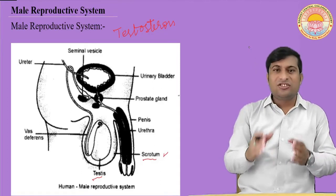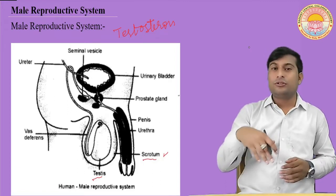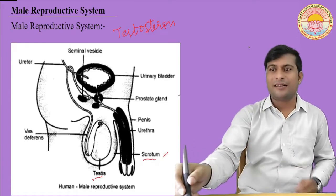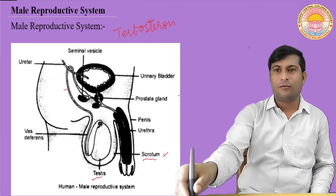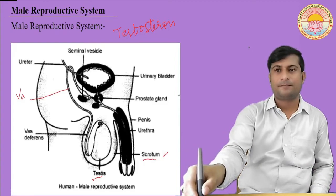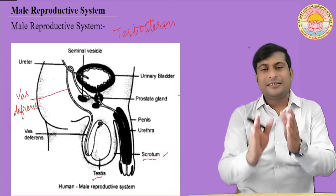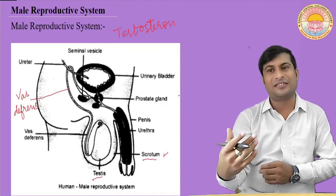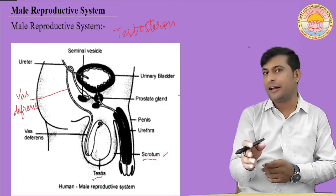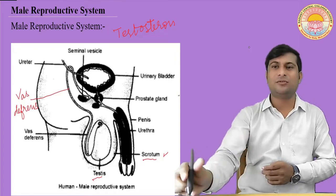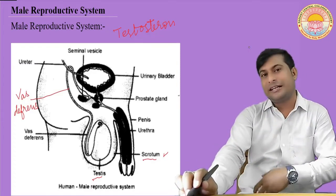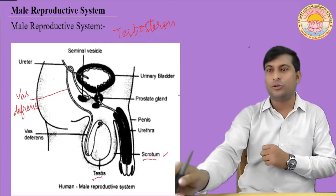The sperm that is produced by the testes needs to be transferred from the testes, and this is carried out by the vas deferens. The male gamete, that is sperm, is delivered through the vas deferens. The vas deferens unites with a tube coming from the urinary bladder, which is called the urethra.